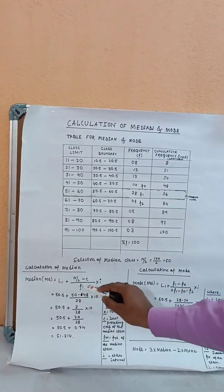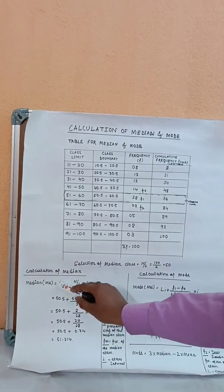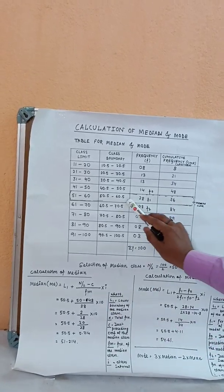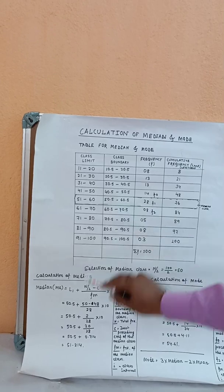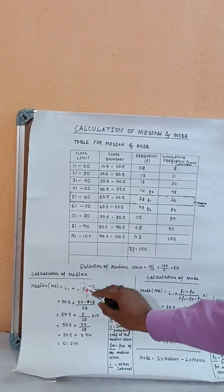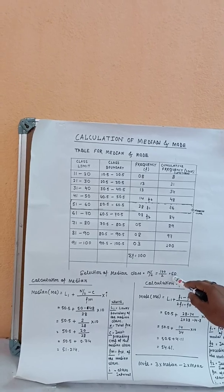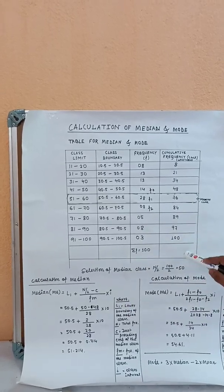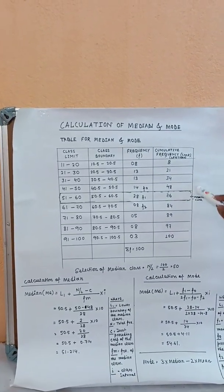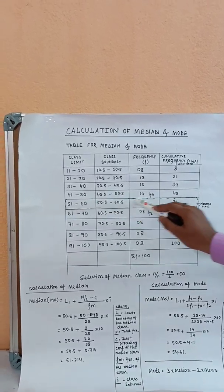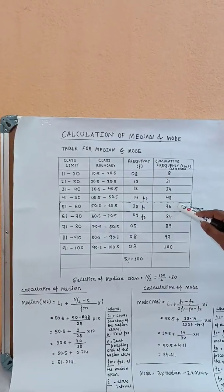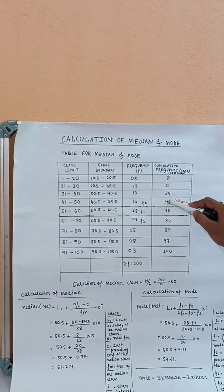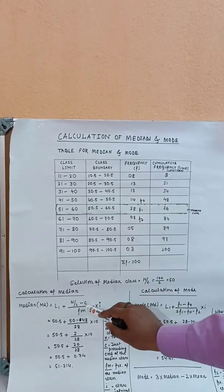The formula is L1 + (n/2 − C) / fm × I. Here, L1 is the lower boundary of the median class, which is 50.5. n/2 is 50. C is the just-preceding cumulative frequency of the median class, which is 48.